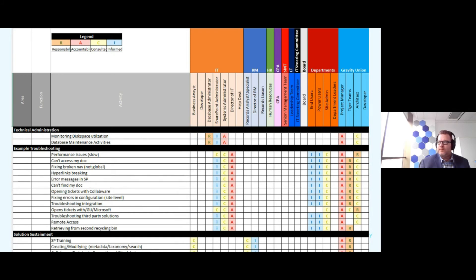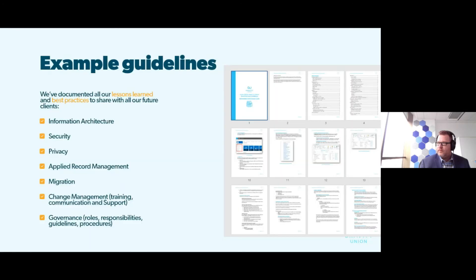Here's an example of a RACI matrix — lots of columns and rows, but essentially it maps roles to tasks. You break them up into the project team versus end users and assign different accountabilities: who can create content types, who can add columns, who can add guest users. These are external users to your SharePoint site or Team — you want to start answering these questions early. We also have starting points from our IP and lessons learned for information architecture, security, privacy, records management, and migration that we adapt as needed.